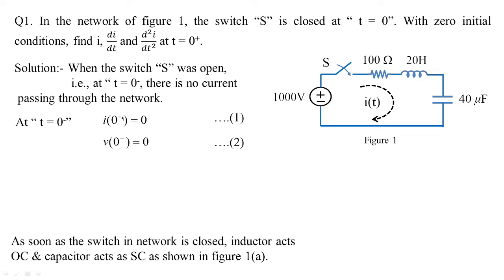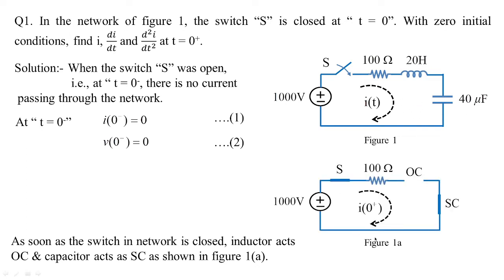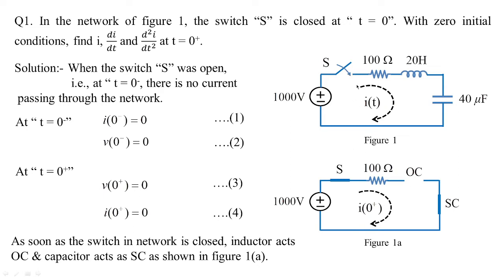From the initial conditions, when the switch closes at t equal to zero, the inductor acts as an open circuit and the capacitor acts as a short circuit. The circuit changes to figure 1a. Since voltage and current cannot change instantaneously, v(0+) is also zero and i(0+) is also zero. These four conditions remain unaffected when the switch is closed.